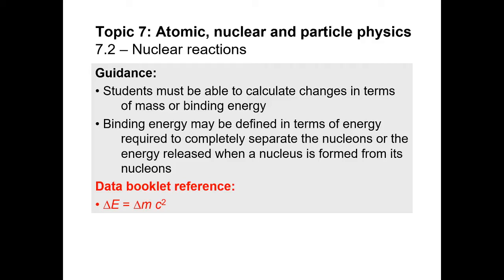Hello and welcome to lesson 7.2: Nuclear Reactions. We are starting with our data booklet reference page with an equation you've seen before — from section 7.1, Einstein's famous energy-matter equivalence formula E = mc². You'll notice something different here: there is a delta symbol in front of both the E and the M, indicating a change in energy and change in mass. We'll get back to this later in the video.